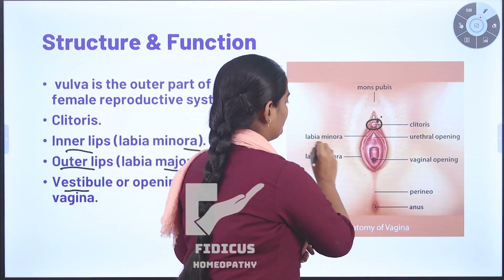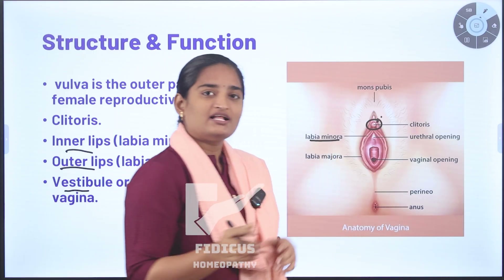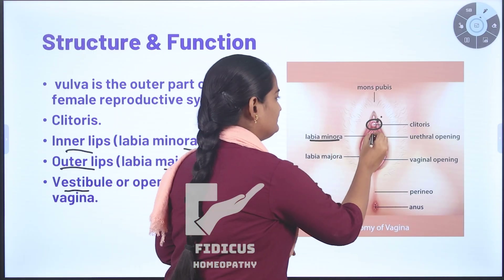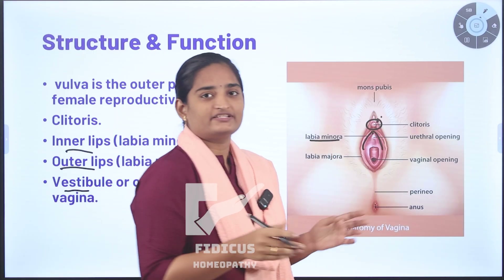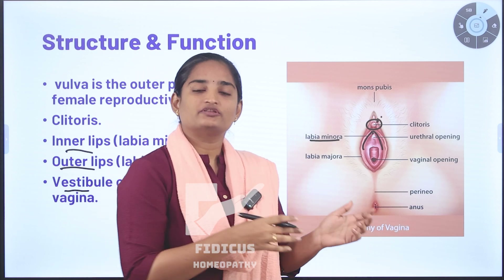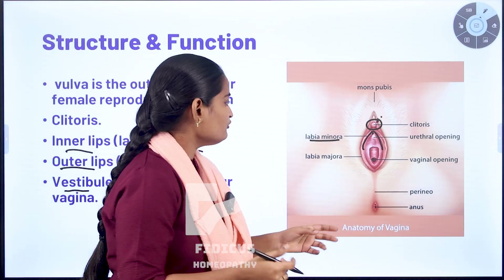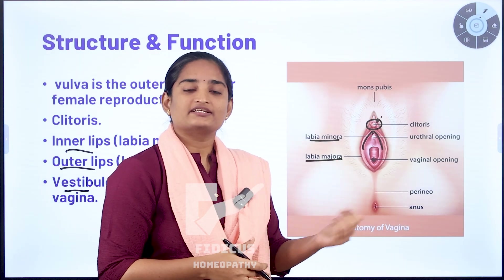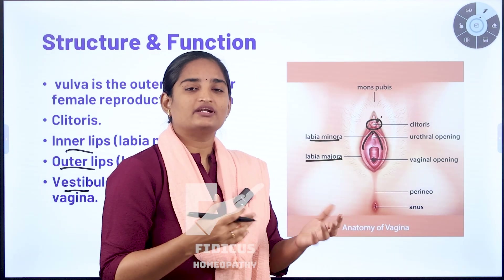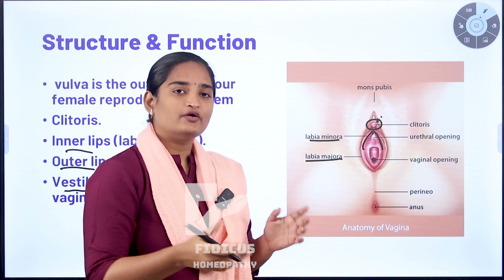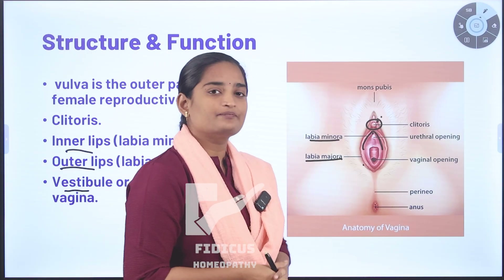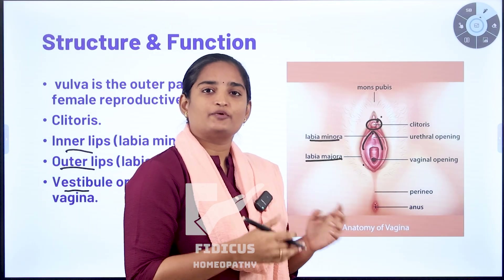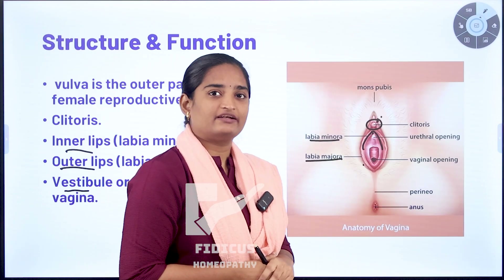Now coming to the labia minora, also called the inner lips. There are two labia minora on either side — these are thin fleshy folds. The labia minora can protect the urethra and vagina. Now the labia majora, also called the outer lips or external lips. These are large fleshy folds. Both the labia majora and labia minora protect the urethra and vagina.